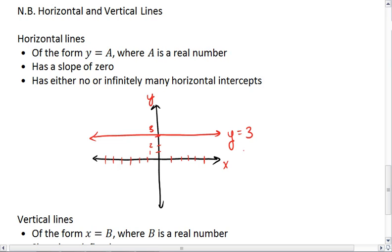A horizontal line has a slope of zero and either has no horizontal intercepts or infinitely many. The way it has infinitely many is if our equation is actually y equals 0, in which case your line is the horizontal axis.